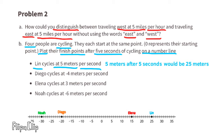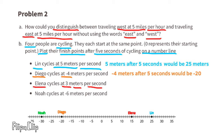Lin is plotted at 25 to the right of zero. Diego cycles at negative four meters per second — this could mean Diego cycles four meters to the west per second. Negative four times five equals negative 20, so Diego's position is plotted at negative 20, to the left of zero on the number line.